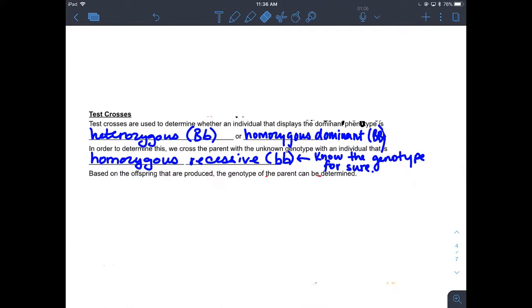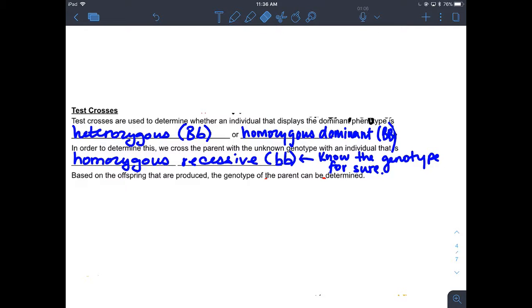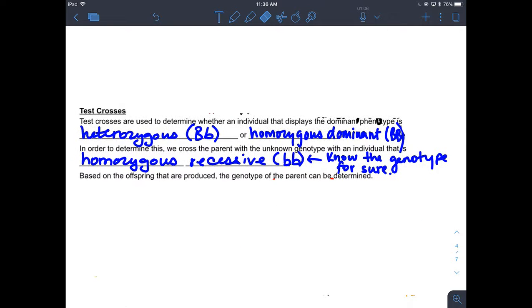Lastly, I just want to talk a little bit about test crosses because I think it's an important question that we discuss. Test crosses are used to determine whether an individual that displays the dominant phenotype is heterozygous or homozygous dominant. In order to determine this, we cross the parent with the unknown genotype with an individual that is homozygous recessive. We know for sure this person's genotype, homozygous recessive. We then cross it with the parent and we look at the offspring. Based on the offspring, it'll help us to determine the genotype of that unknown parent.